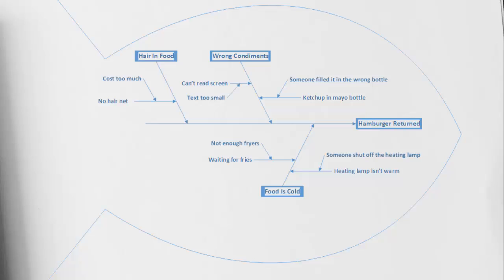Looking at the wrong condiments cause, there are two primary causes. Maybe we're putting the wrong condiments on the hamburger because we can't read the screen — and why can't we read the screen? Because the text is too small. Another cause under wrong condiments is ketchup in the mayo bottle — perhaps somebody filled it into the wrong bottle.